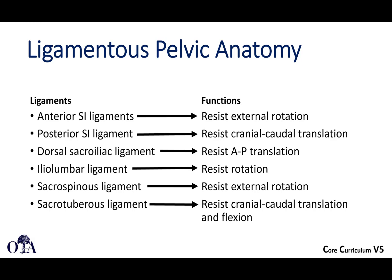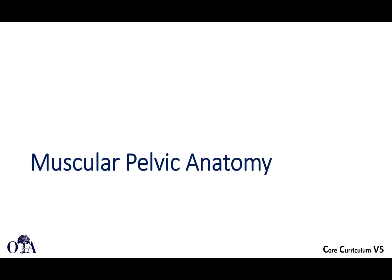What do the ligaments do? The anterior SI ligaments help to resist external rotation and will often fail first with external rotation patterns. Posterior SI ligaments resist vertical translation — when you have a vertically and rotationally unstable pelvic fracture, typically the posterior SI ligaments or equivalent, like a vertical sacral fracture, have occurred. The dorsal sacroiliac ligaments resist AP translation. The iliolumbar ligament helps to resist rotation. The sacrospinous ligament also resists external rotation, and the sacrotuberous ligament resists cranial-caudal translation and flexion.